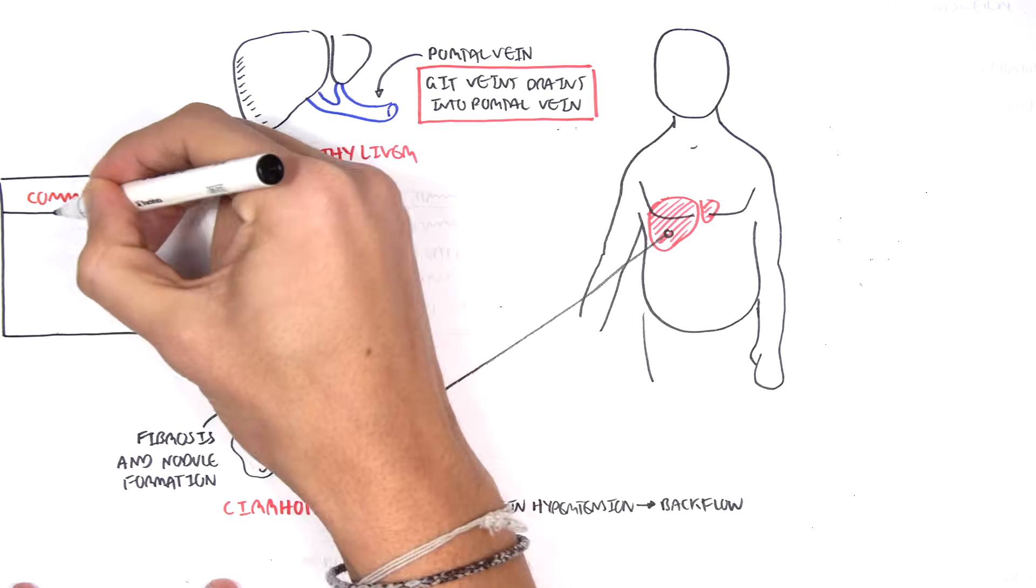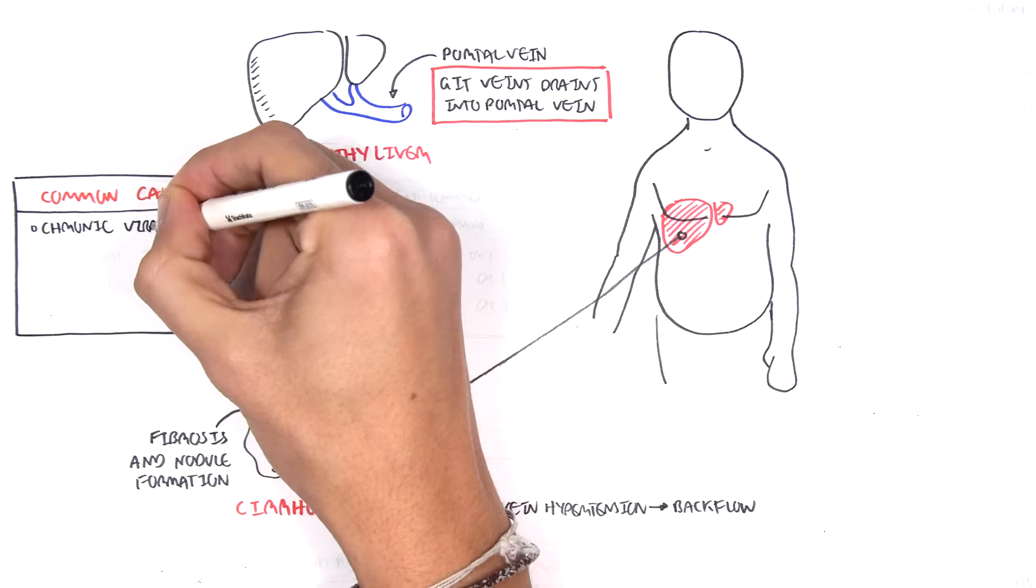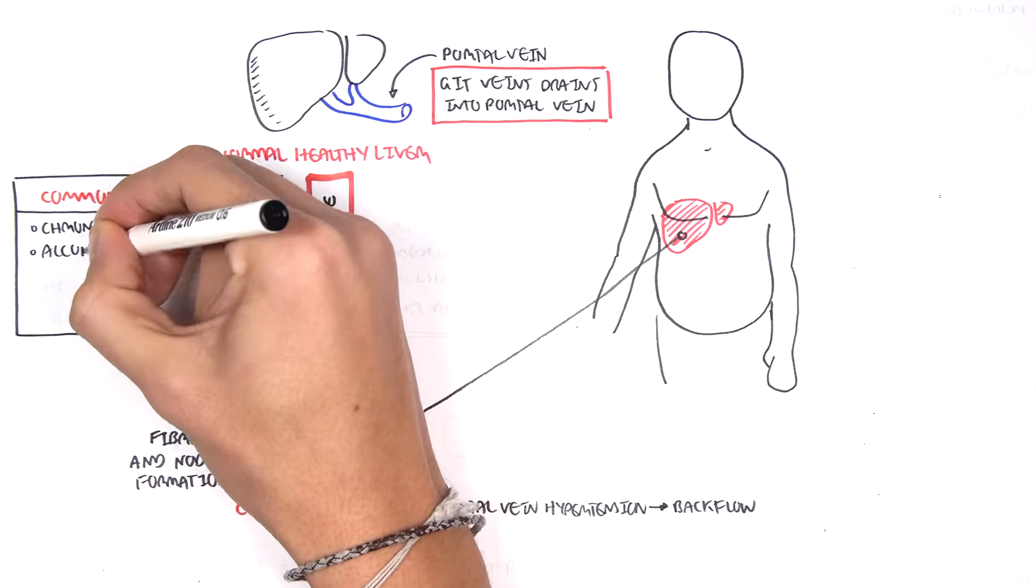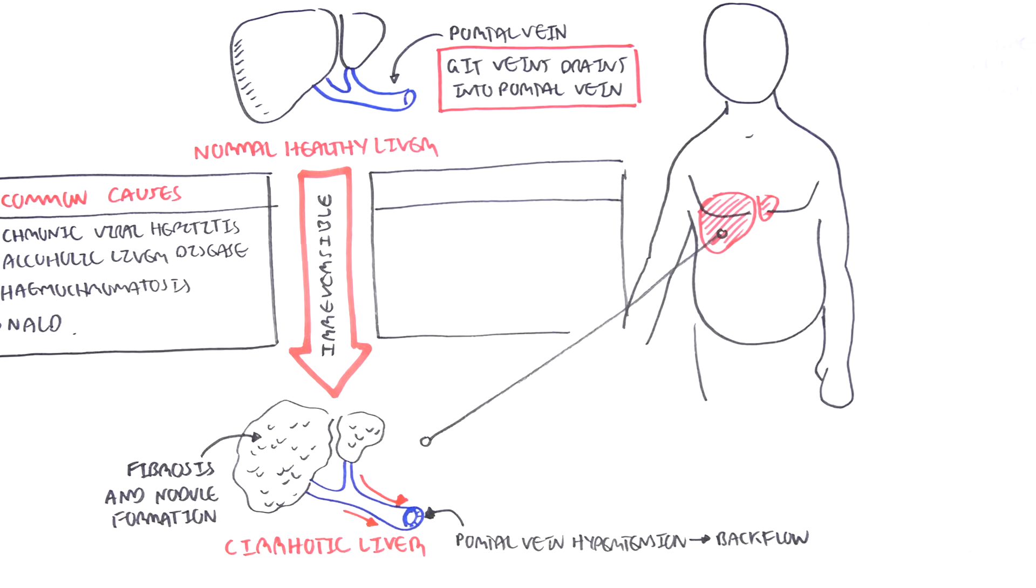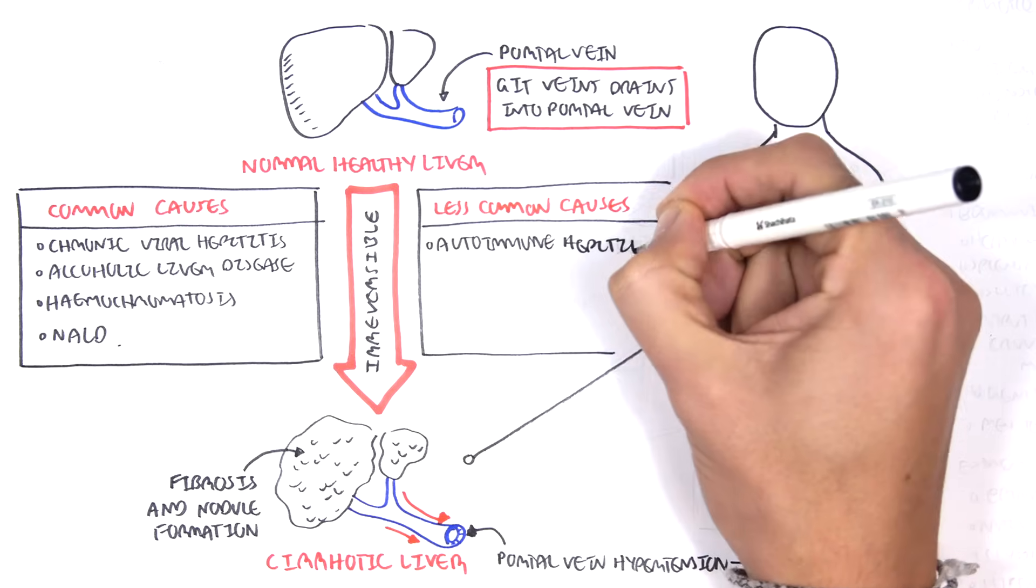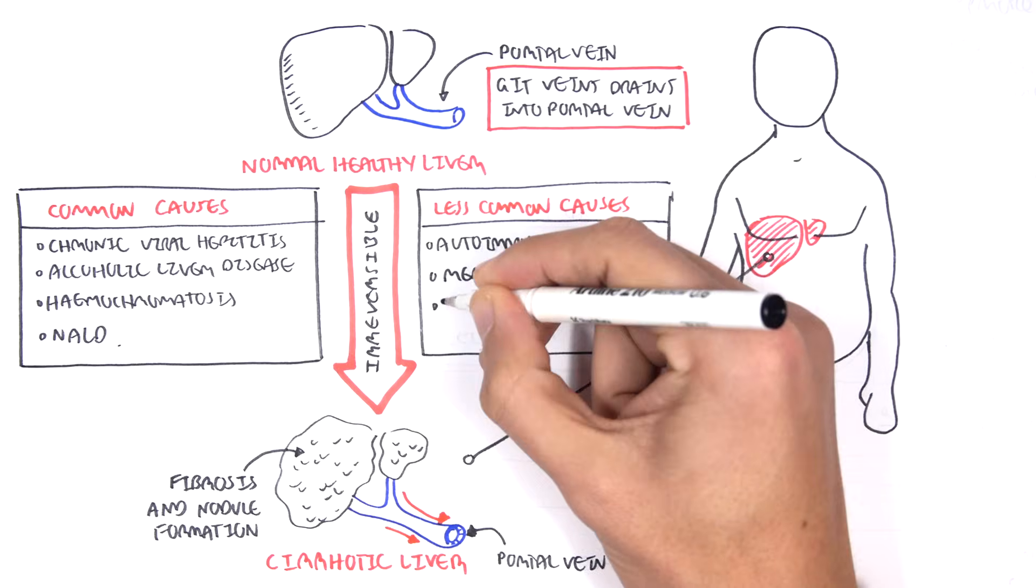Common causes of liver cirrhosis include chronic viral hepatitis, alcoholic liver disease, and hemochromatosis. Less common causes include autoimmune hepatitis, medications, Wilson's disease, and celiac disease.